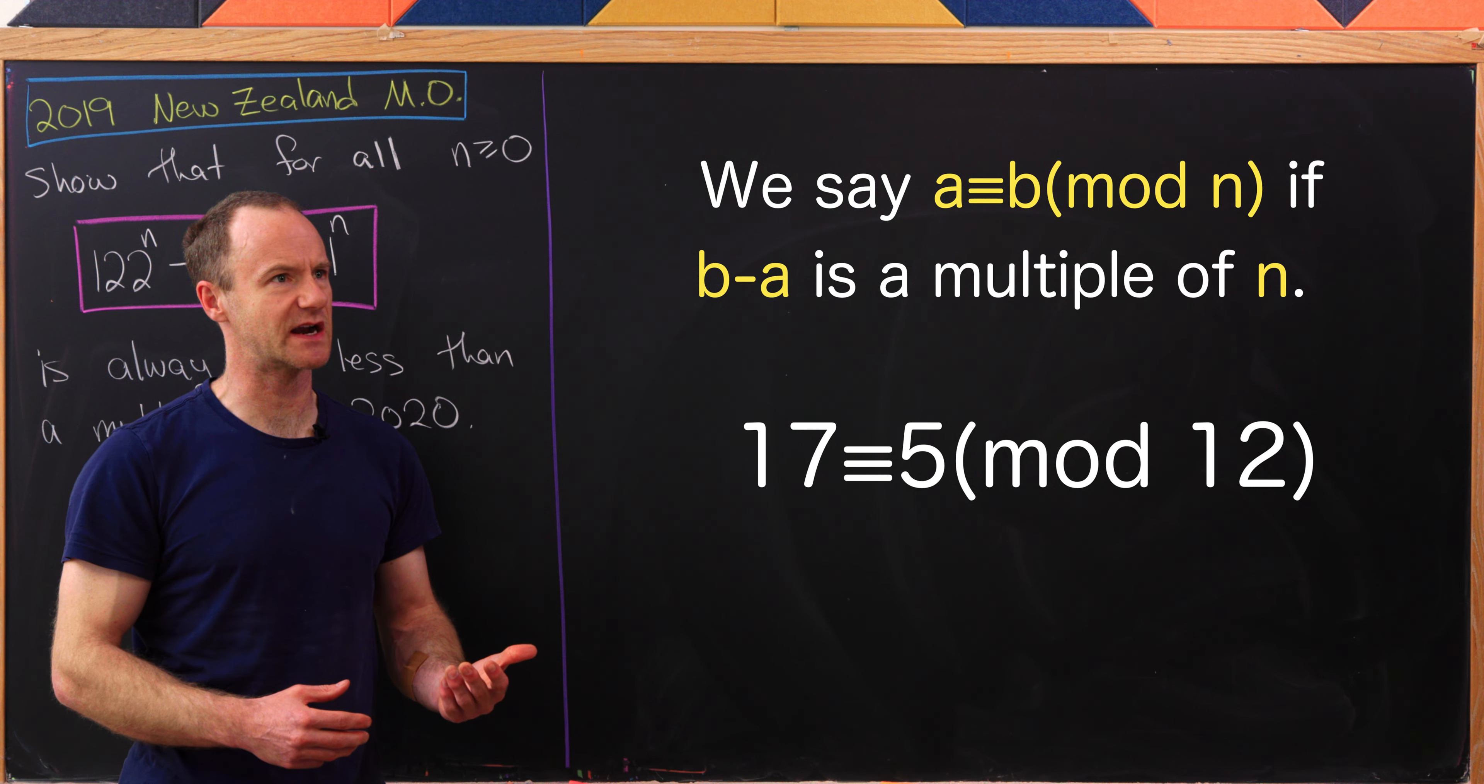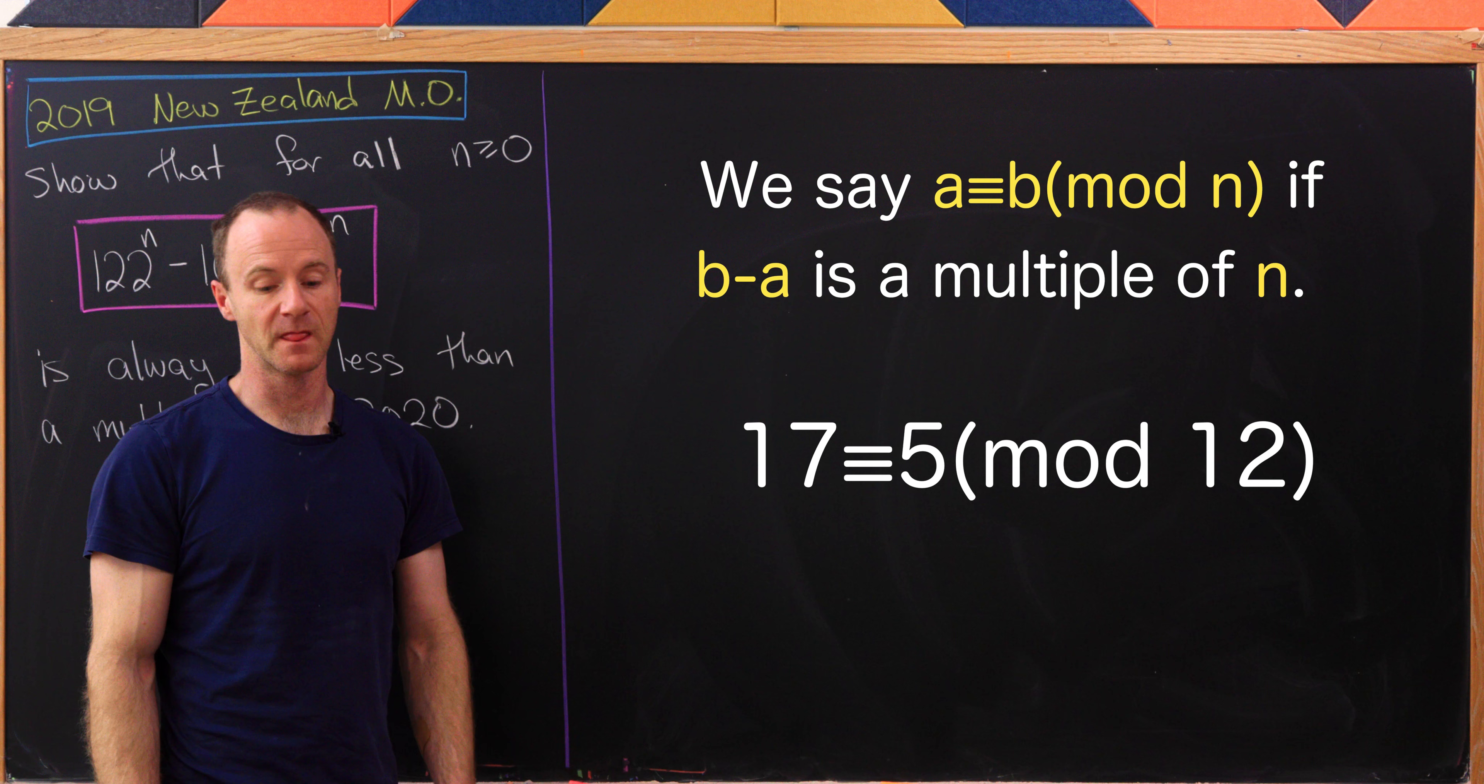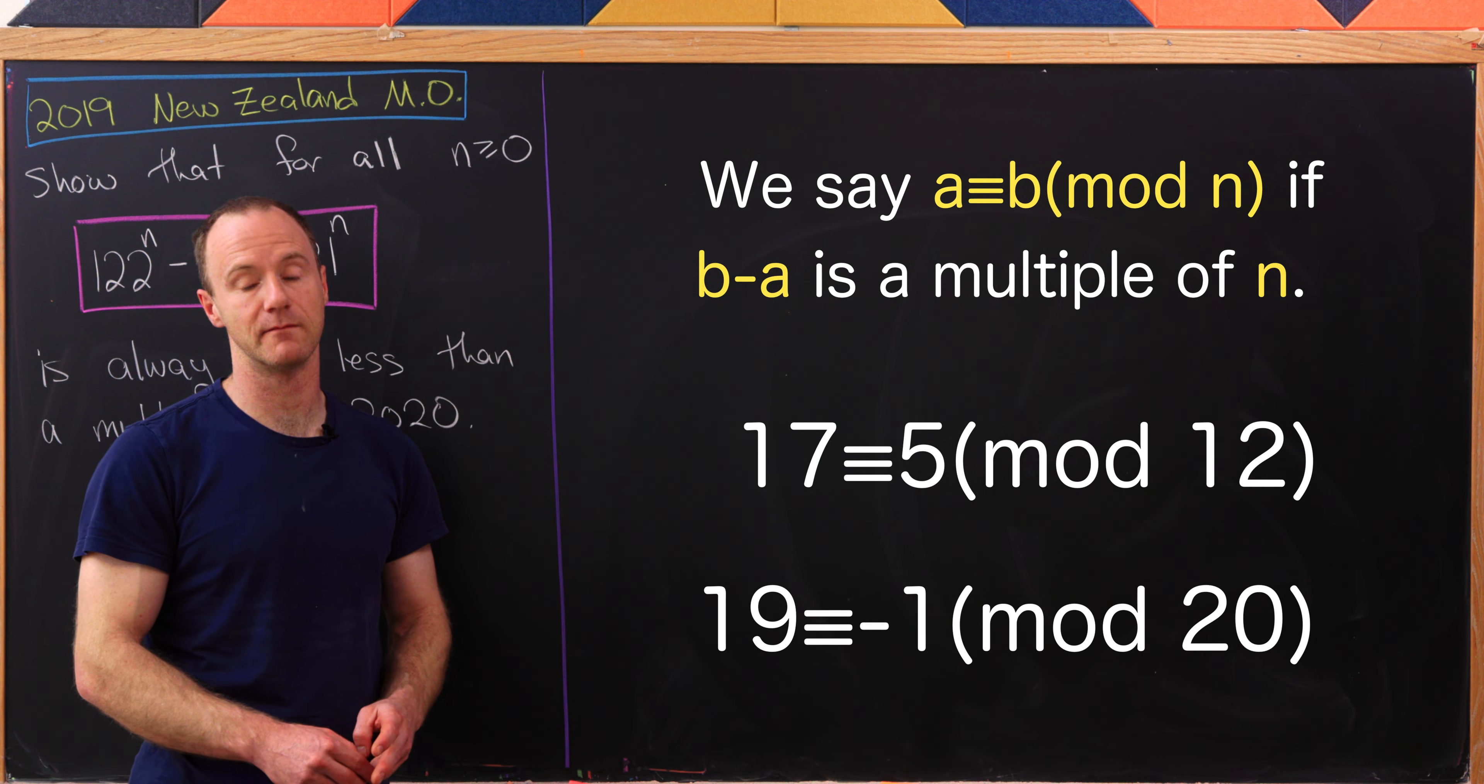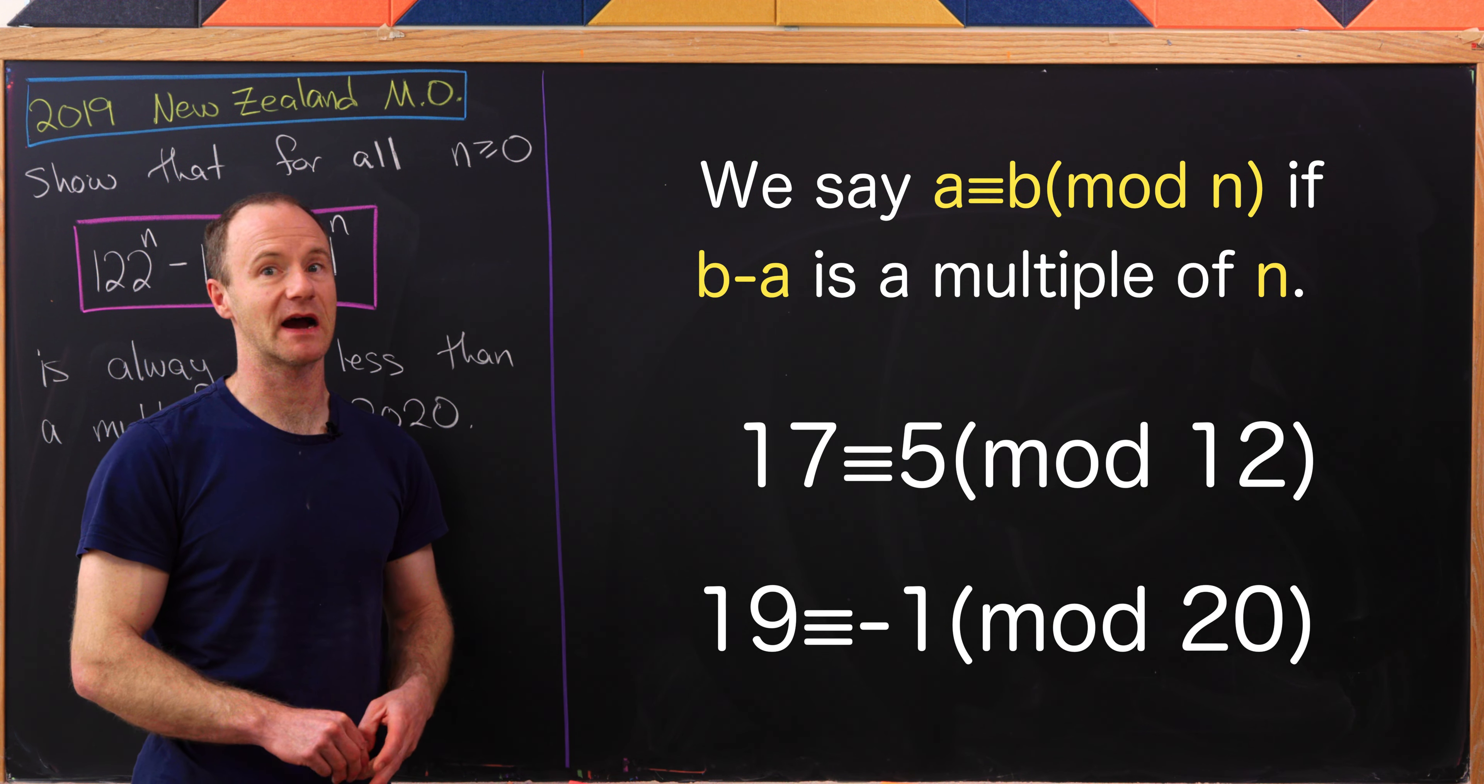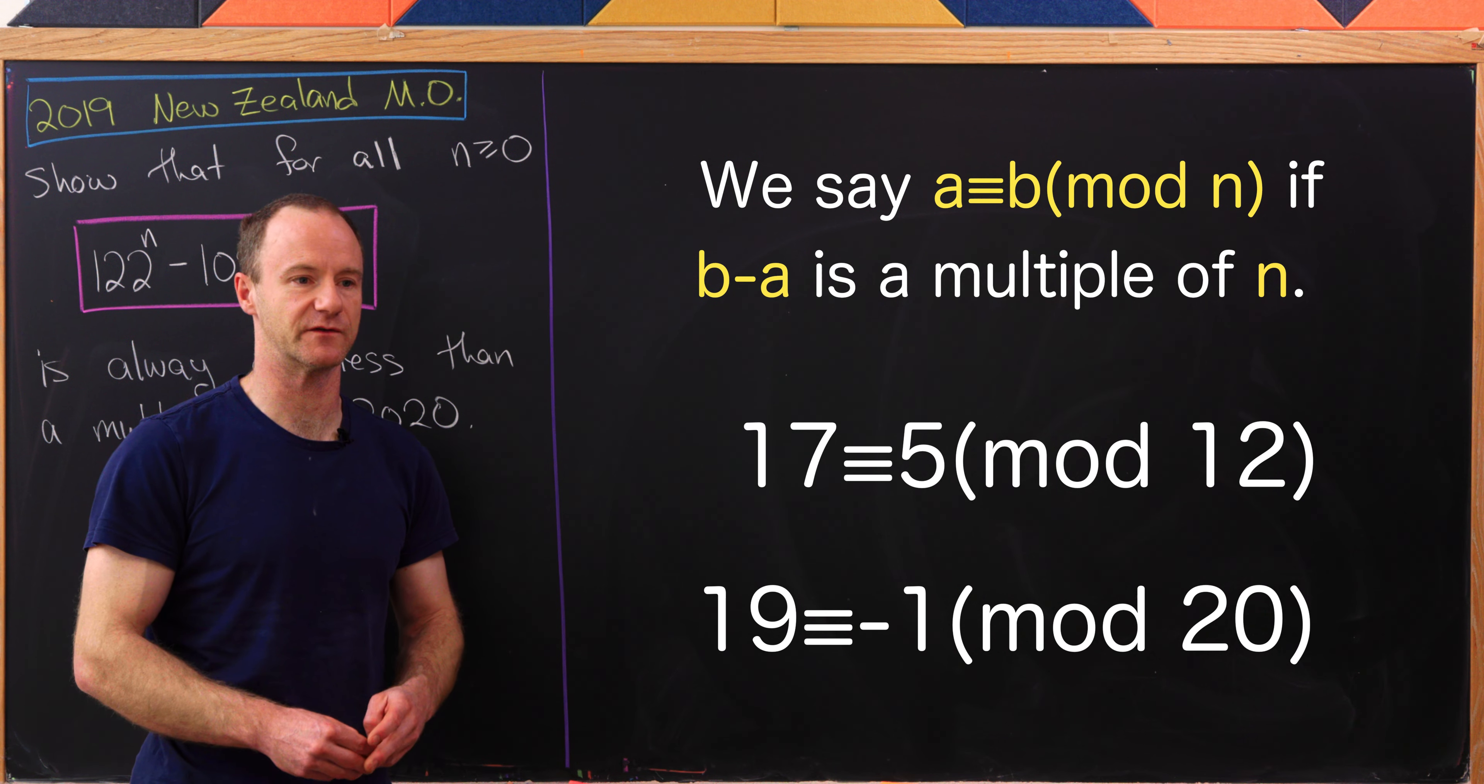For two examples, let's notice that 17 is congruent to 5 mod 12. That's because 17 minus 5 is equal to 12. That's most definitely a multiple of 12. And furthermore, 19 is congruent to negative 1 mod 20. That's because 19 minus negative 1, well that's equal to 20. That's most definitely a multiple of 20.